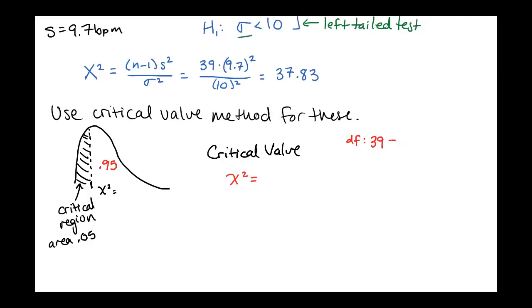Now 39 is not in the table, so we'll go ahead and use 40 since that's the closest. And then we're going to look for area to the right of 0.95. And this gives us a chi-squared value of 26.509.